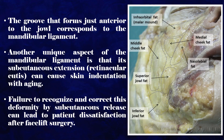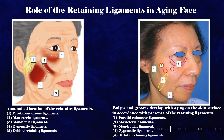Failure to recognize and correct this deformity by subcutaneous release can lead to patient dissatisfaction after facelift surgery. The anatomical locations of the retaining ligaments include: (1) parotid cutaneous ligaments, (2) masseteric ligaments, (3) mandibular ligament, (4) zygomatic ligaments, and (5) orbital retaining ligaments. Bulges and grooves develop with aging on the skin surface in accordance with the presence of these retaining ligaments.